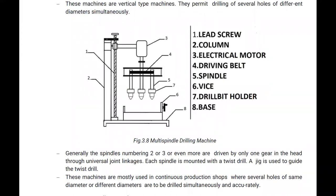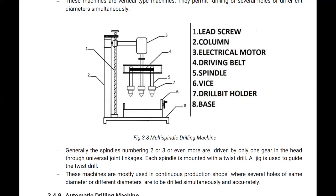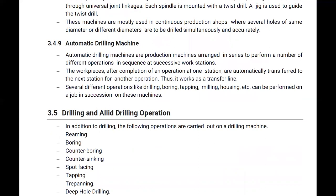A jig is used to guide the twist drill. These machines are mostly used in continuous production shops where several holes of the same or different diameters are to be drilled simultaneously and accurately.